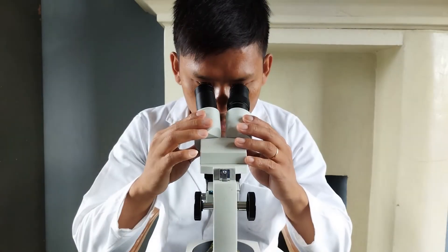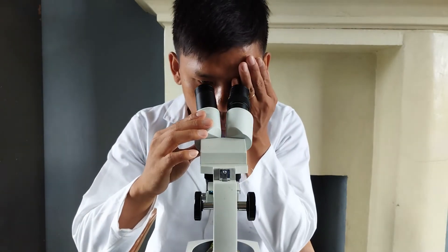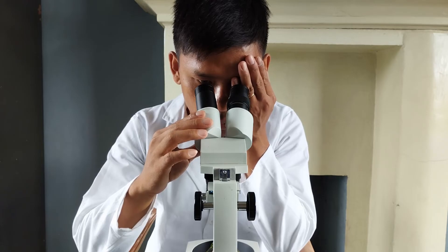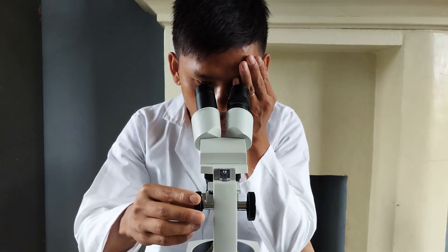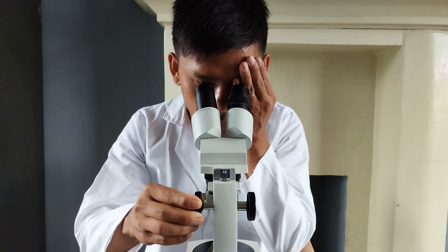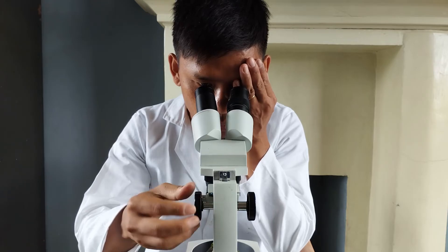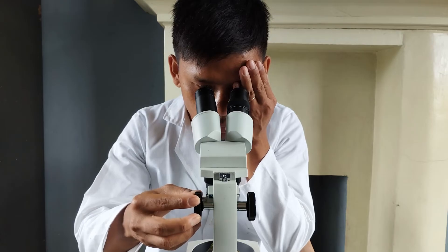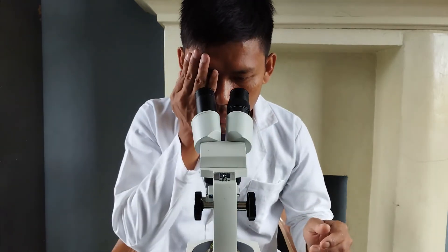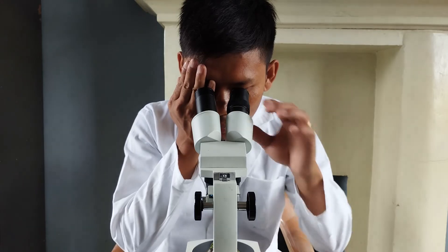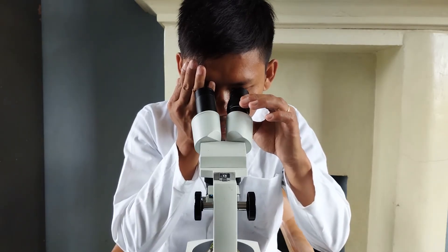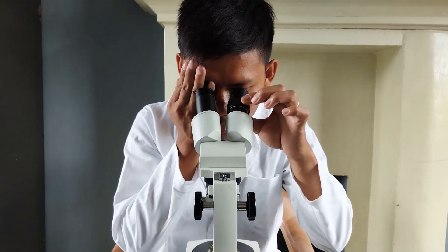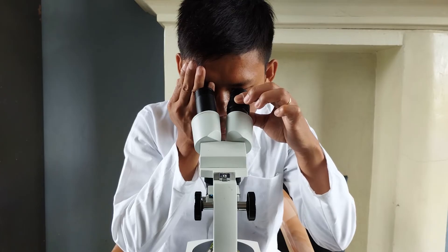To focus align both eyepieces, first cover the left eye and look into the right eyepiece with the right eye, then carefully rotate the focus adjustment knob until the specimen is in focus. Once you have the specimen in focus through the right eyepiece, cover the right eye and then look through the left eyepiece using the left eye. Without readjusting the focus adjustment knob that had been already set for the right eye, adjust the focus of the left eyepiece by rotating the eyepiece tube clockwise or counterclockwise until the specimen comes into clear focus.